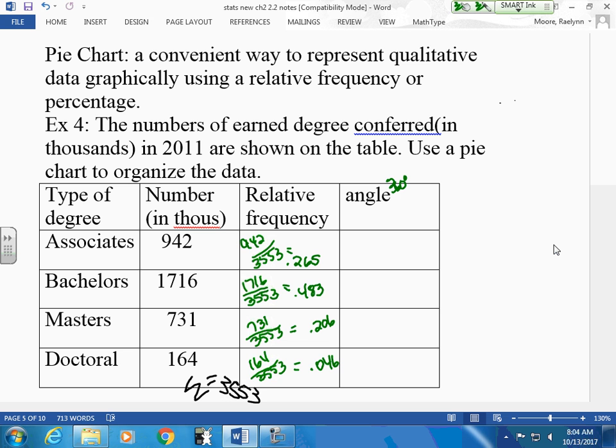Three hundred and sixty degrees. So again, I want to know which portion of the three hundred and sixty degrees 0.265 represents. So all I'm going to do is this: 0.265 times 360, 0.483 times 360, 0.206 times 360. You can round this to the nearest angle.